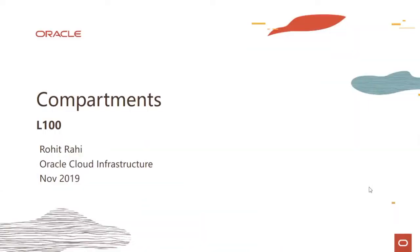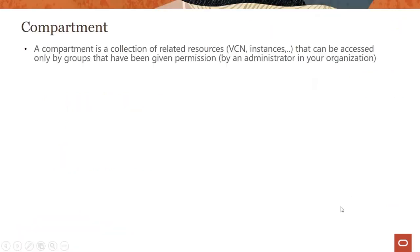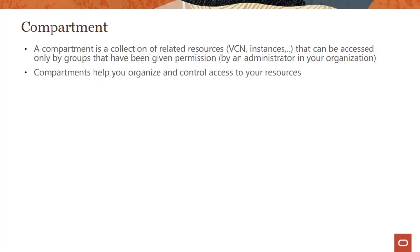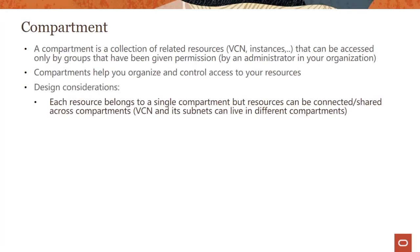This module is on OCI compartments. My name is Rohit Rahi and I'm part of the Oracle Cloud Infrastructure team. A compartment is a collection of related resources like VCN, compute instances, and database instances that can be accessed only by groups that have been given permissions by an admin in your organization. The whole idea of compartments is to help you organize and control access to your resources.